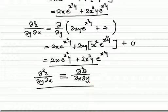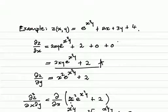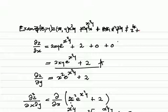I hope you understand this and can practice it to prepare well. As practice examples, let's say you have z(x,y) = x squared y plus y cubed x plus sine of x squared y cubed, plus x squared plus y cubed.